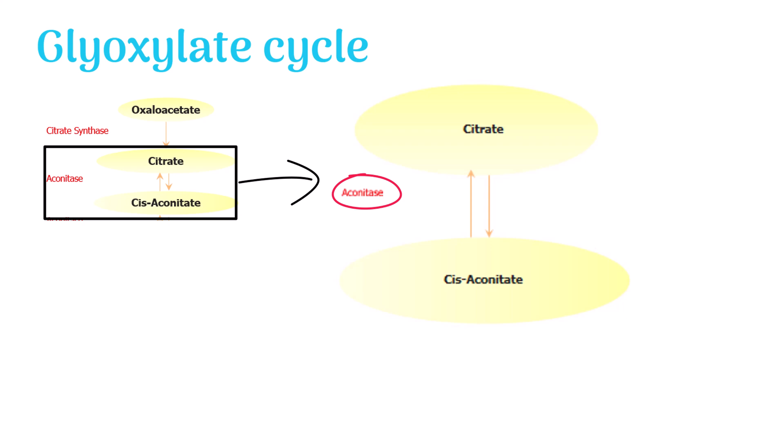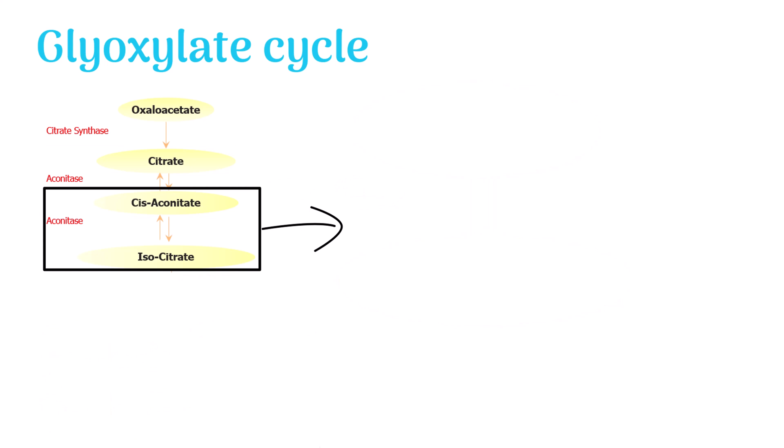Let's move on to the next reaction. In this reaction, cis-aconitate is converted into isocitrate. Aconitase is the enzyme that boosts this conversion. This reaction is also reversible.